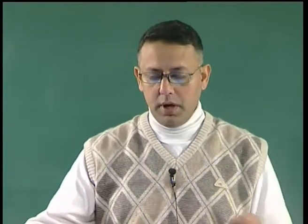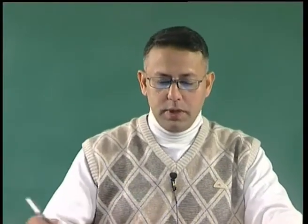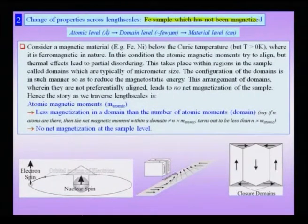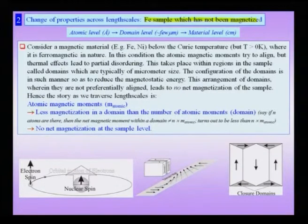We shall consider one more example wherein we traverse across length scales and see some interesting effects in terms of the properties of a material. The case considered here is an iron sample which has not been magnetized — in other words, an iron sample which does not behave like a permanent magnet microscopically.